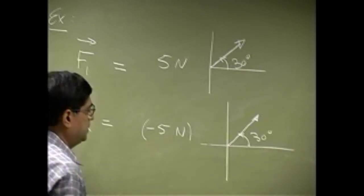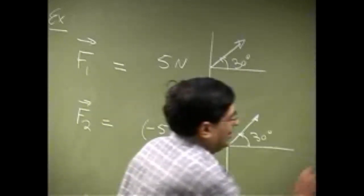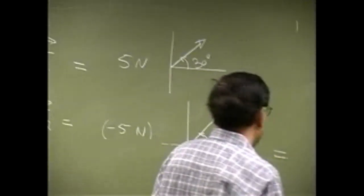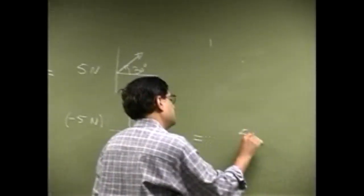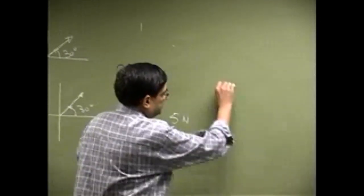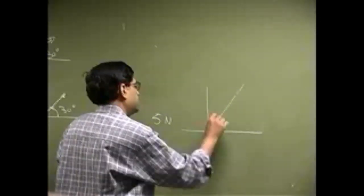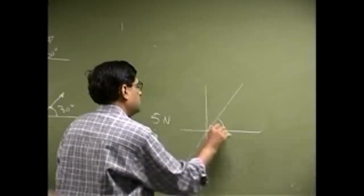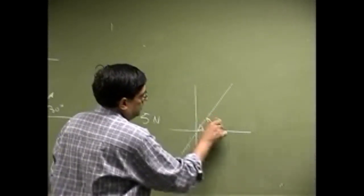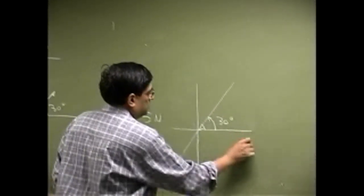This one could also be equal to another force as having magnitude 5 newton and all we do is change the direction. It's an arrow going outside because the arrow within origin.